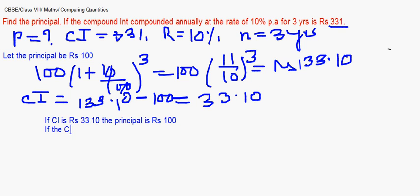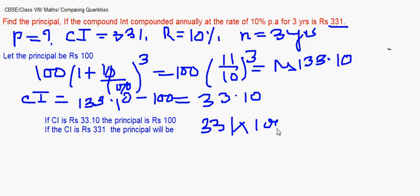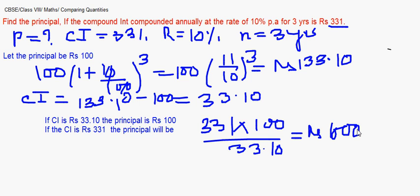So if the compound interest is given as rupees 331, the principal will be 331 × 100 ÷ 33.10, which gives rupees 1000. So the principal is 1000, on which you get an interest of 331 at a rate of 10% per annum for three years. This is one way of doing it when compounded annually.